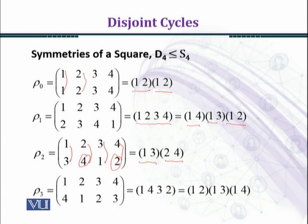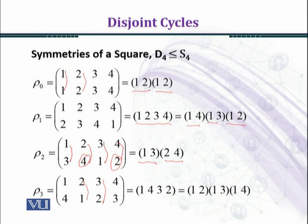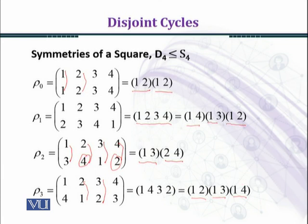Now considering ρ₃: 1 goes to 4, 4 goes to 3, 3 goes to 2, and 2 goes to 1, completing the cycle (1 4 3 2). We transform this into a product of transpositions written from right to left as (1 4)(1 3)(1 2). Computing the product of these transpositions confirms we get the cycle (1 4 3 2).